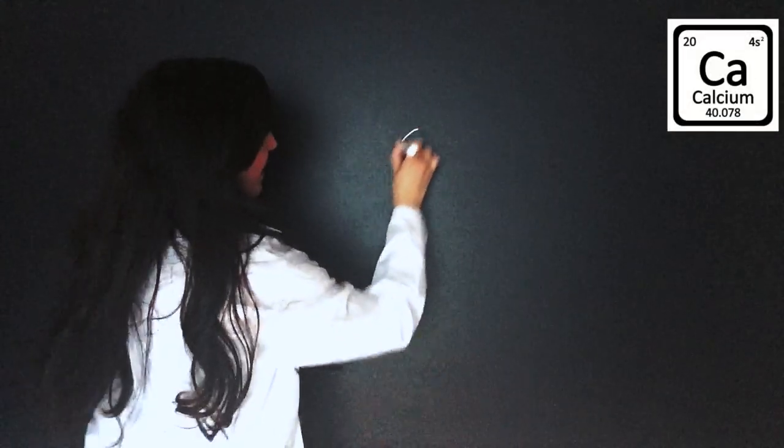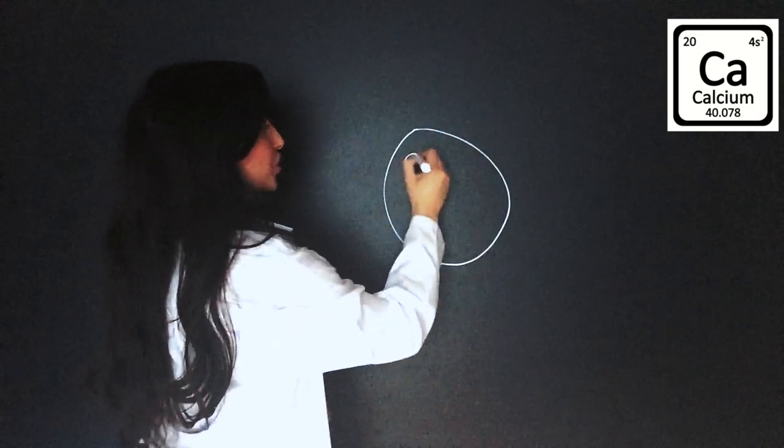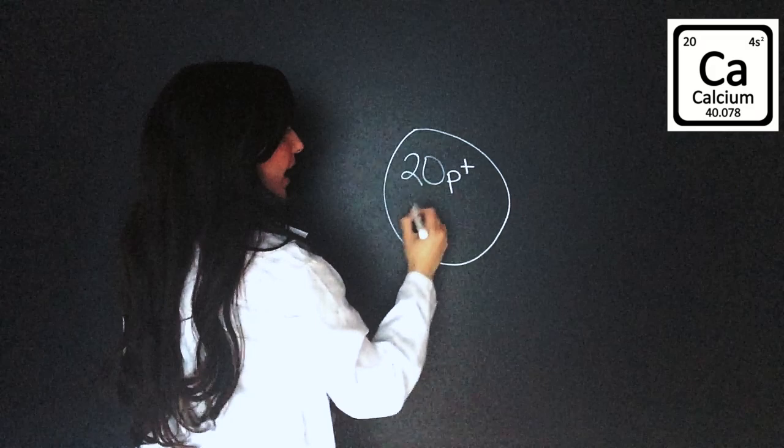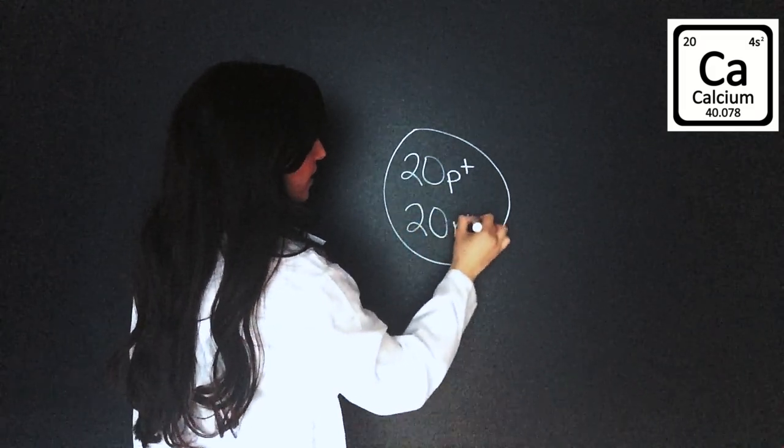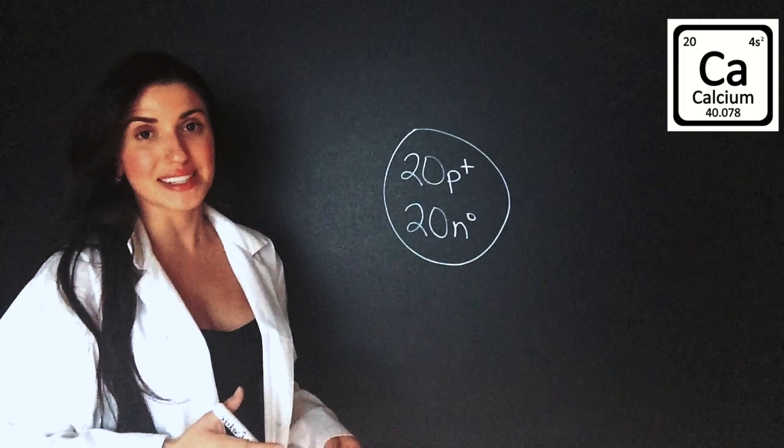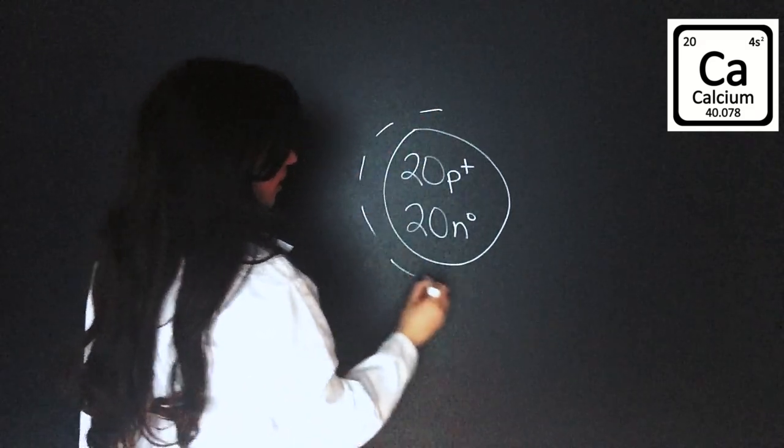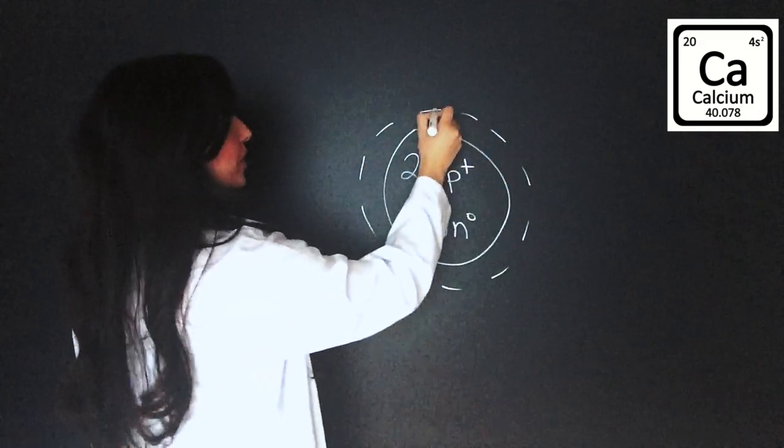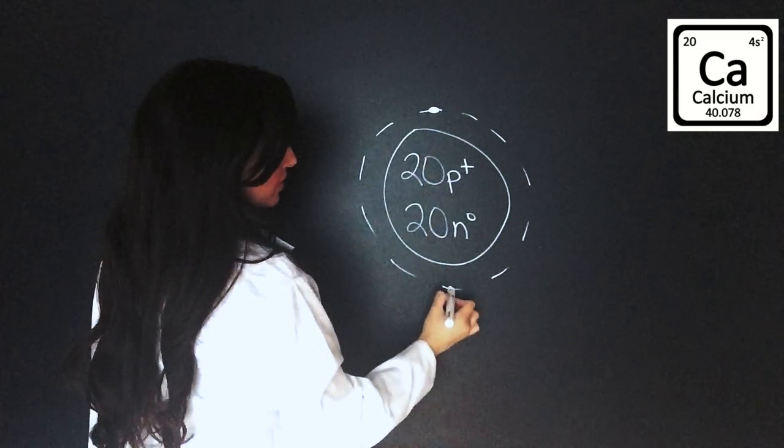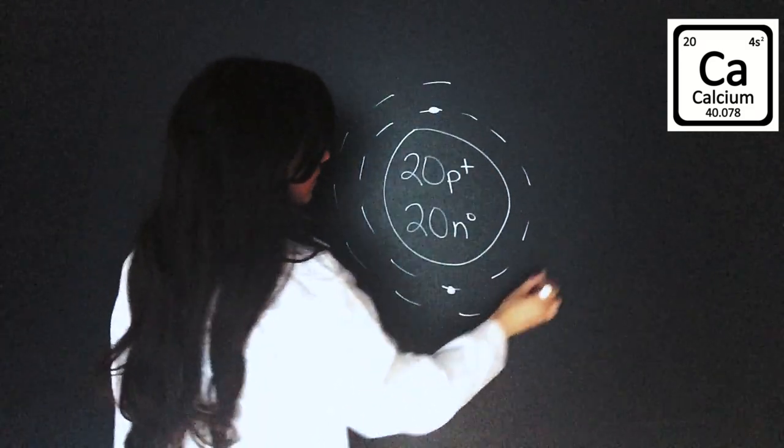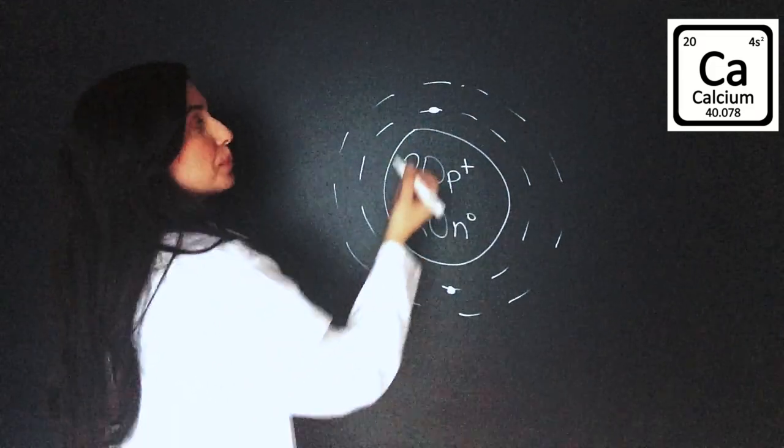Now for my last example, I want to show you an atom that has a lot of electrons and subsequently four different electron orbitals. Let's do calcium. Calcium has 20 protons and 20 neutrons. If we're going to keep this element neutral, we need to draw 20 electrons. Let's do it. The first orbital is two.